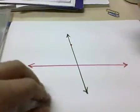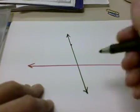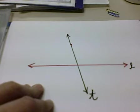So here is our transversal. I am going to label this line L and I will label this one T.